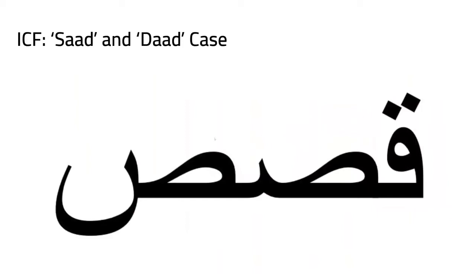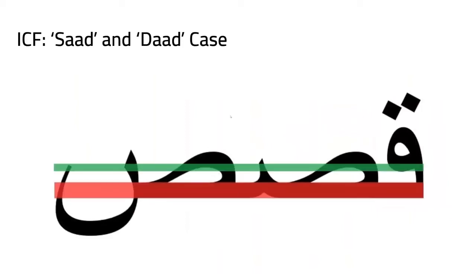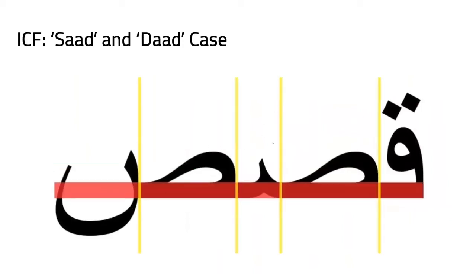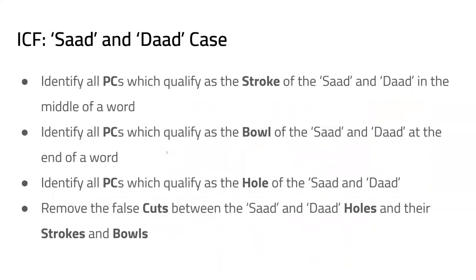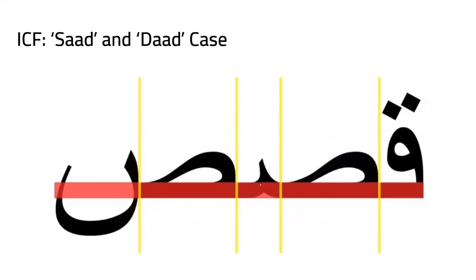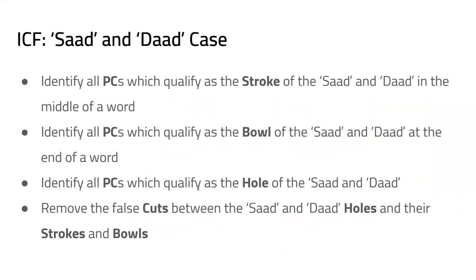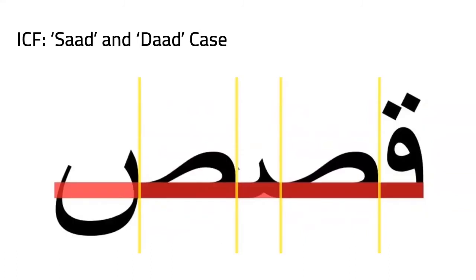The second case is the Sad and Dad case. Again, finding the baseline, LMT, and making cuts shows the Sad split into two. The Sad's shape differs by position — at the end of a word it has a bowl similar to the Sin. The algorithm identifies the Sad stroke, the bowl, and the hole, and removes cuts whenever it detects a hole-and-stroke or hole-and-bowl pattern.